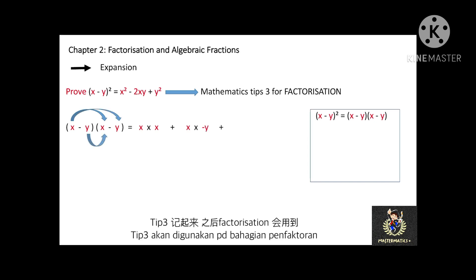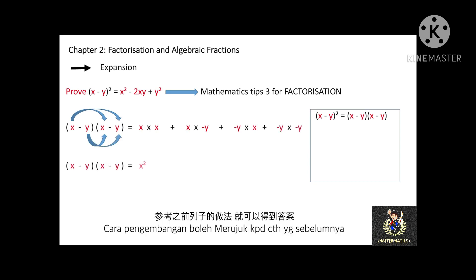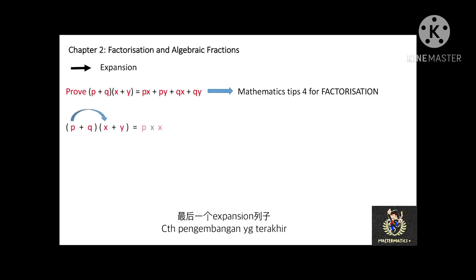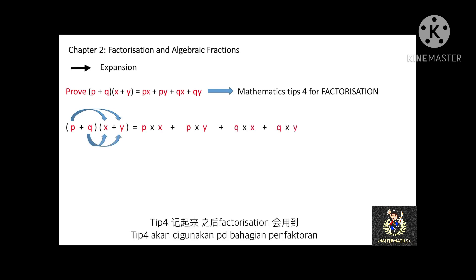Mark this as Mathematics Tips 3 for the factorization in the next topic. The method of expansion is similar to the previous example, just with some positive and negative differences. The last one: prove that (p plus q) multiplied with (x plus y) equals px plus py plus qx plus qy. Mark this as Mathematics Tips 4 for the factorization in the next topic.